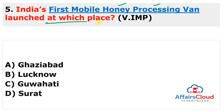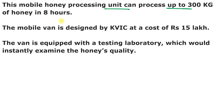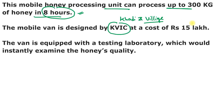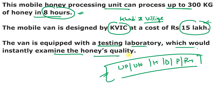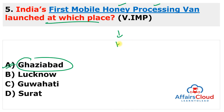Next question: India's first mobile honey processing van was launched at which place? It was launched in Ghaziabad. The mobile honey processing unit can process up to 300 kg of honey in eight hours. The mobile van was designed by KVIC — Khadi and Village Industries Commission — established at a cost of 15 lakh rupees. The van is equipped with a testing laboratory to instantly examine honey quality and will benefit beekeepers in rural areas of Uttar Pradesh, Uttarakhand, Haryana, Delhi, Punjab, and Rajasthan. The chairman of KVIC is Vinay Saxena.